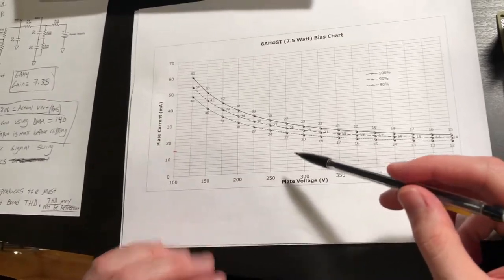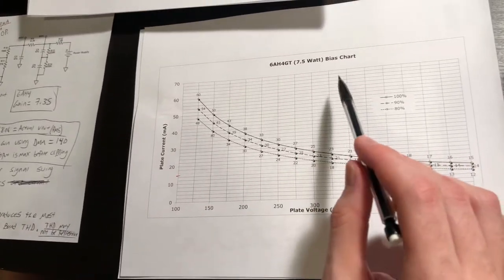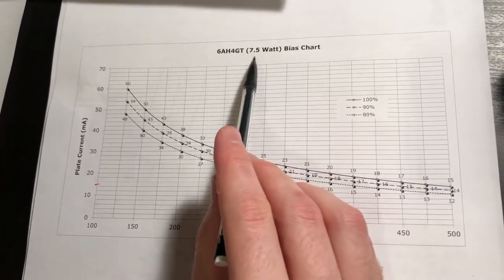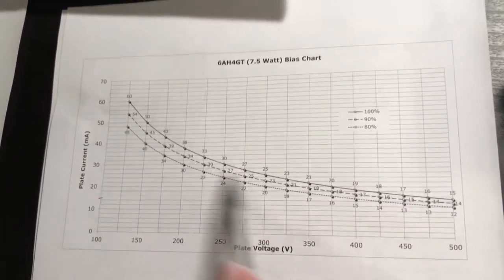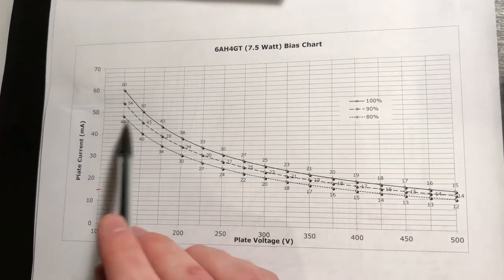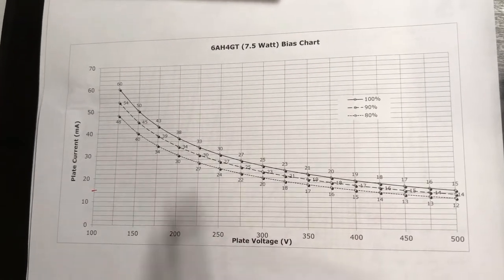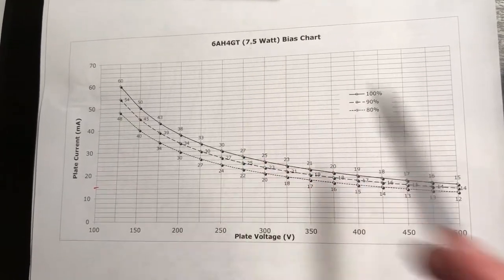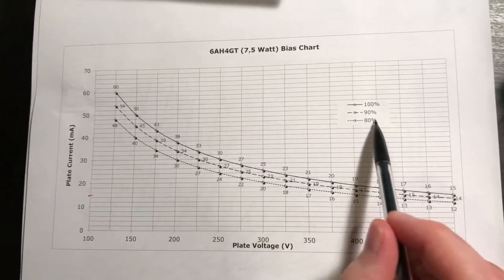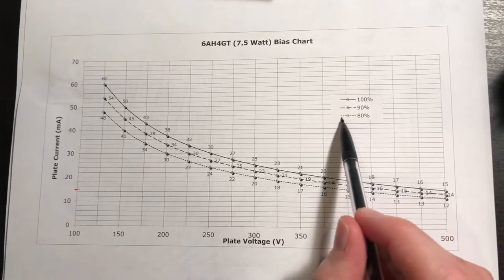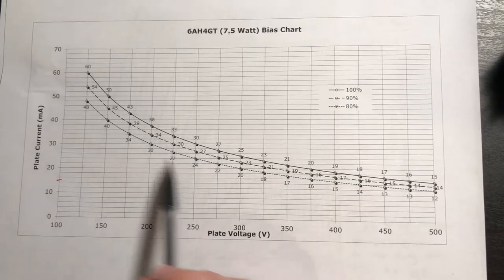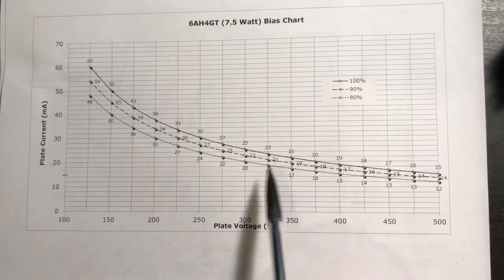The last thing I wanted to show real quick is this is just a plate dissipation curve I made. So the 6AH4 is capable of 7.5 watts, and I calculated basically the allowable plate current for percentages of power dissipation relative to 7.5 watts. So 80 percent dissipation of the plate handling this tube is this lower curve here.